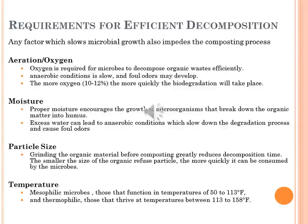Requirements for efficient decomposition: Decomposition of organic matter in a compost pile depends on maintaining microbial activity. Efficient decomposition occurs if aeration, moisture, particle size and a sufficient source of carbon and nitrogen are in place. Aeration: oxygen is required for microbes to decompose organic waste. Some decomposition occurs in the absence of oxygen; however, the process is slow and foul odors may develop. Because of the odor problem, composting without oxygen is not recommended in residential settings unless conducted in a fully closed system. The more oxygen — up to at least 10–12% — the more quickly degradation will take place.